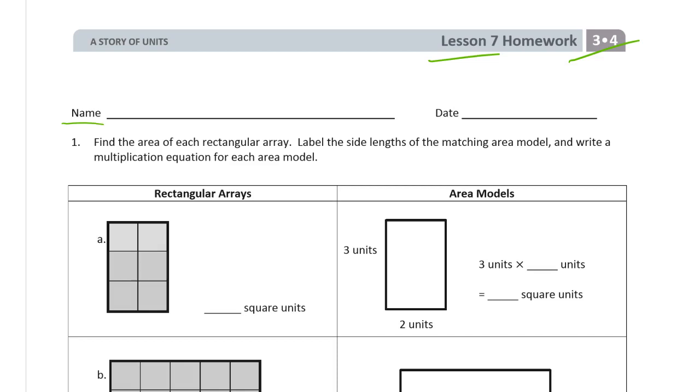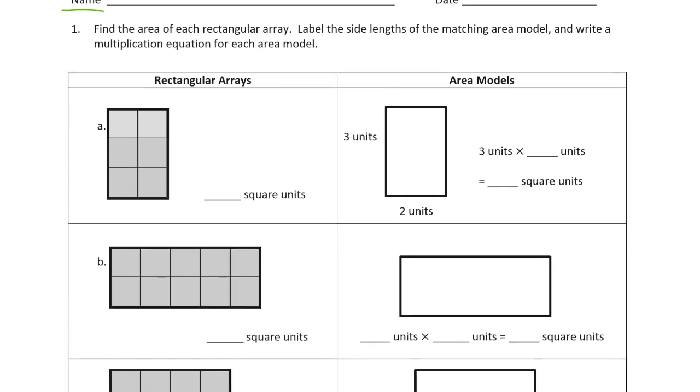We're finding, we're working on making the connection between counting squares and area and multiplying the side lengths. It says find the area of each rectangular array. Label the side lengths of the matching area model. And write a multiplication equation for each area model. And the first one is set up for us. The square units here, you can just count them. 1, 2, 3, 4, 5, 6. 6 square units.